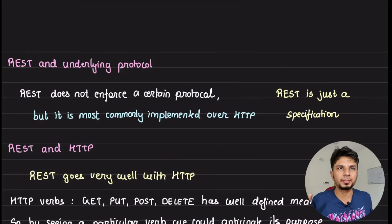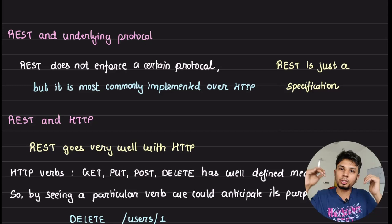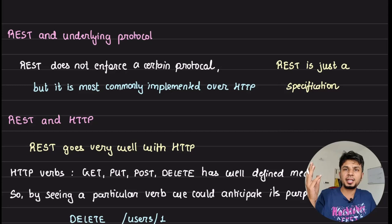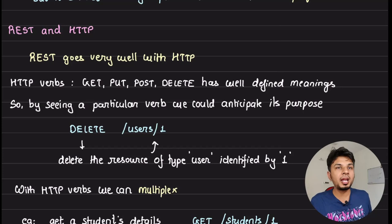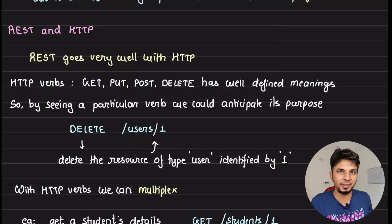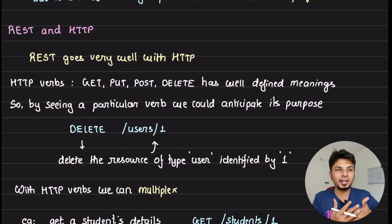When you want to create, update, or delete a resource, you specify it as a verb — the action you want to take on the resource. REST is just a specification; it does not enforce which protocol to use. You can choose TCP, HTTP, or any protocol to implement REST. The most common implementation is with HTTP, and they gel so beautifully well that when we now write APIs, we write REST APIs. The way we define our URLs is how REST recommends, and both have become very synonymous.